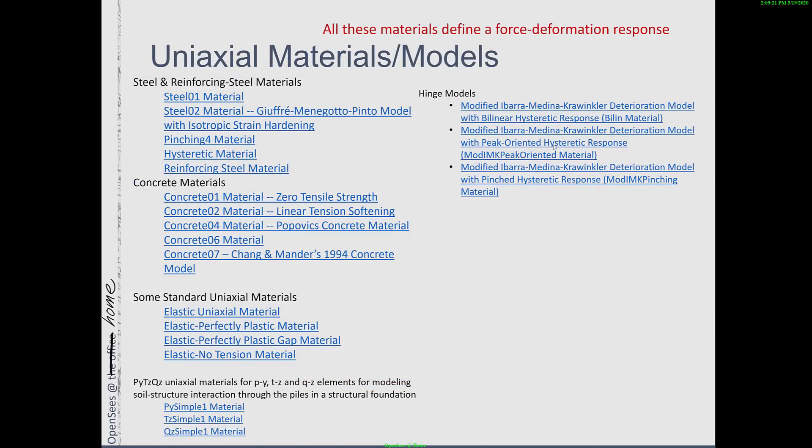This is the library of materials that I'm going to go through today — it's just a subset of the materials. I'm going to look at some steel or reinforcing steel materials, some concrete materials. I'm actually going to start with just the standard uniaxial materials, such as an elastic uniaxial material. I'm going to cover the hinge models and modified IMK models. And I'm also going to show you some soil spring materials, the PY spring material.